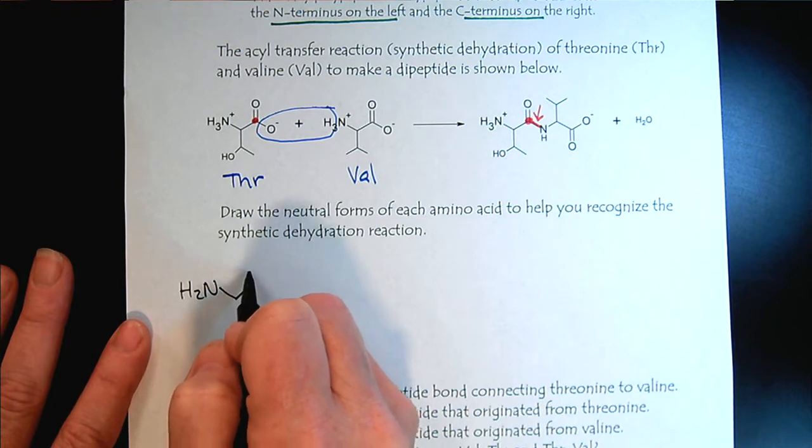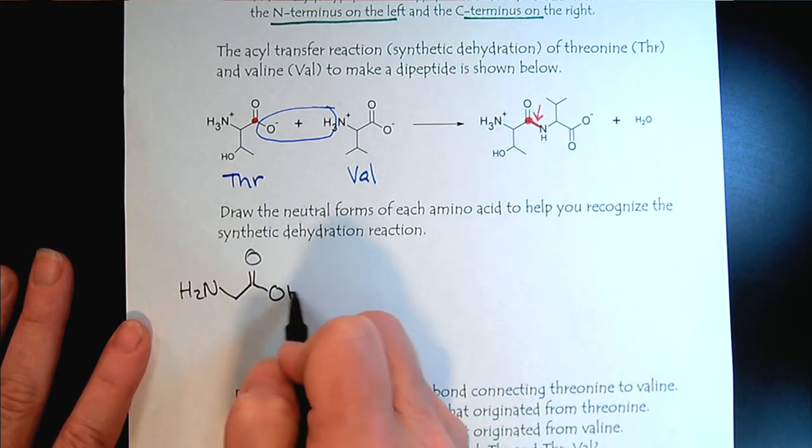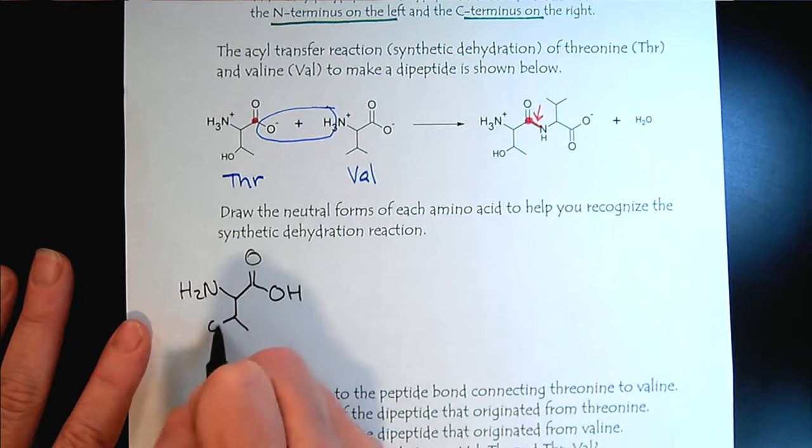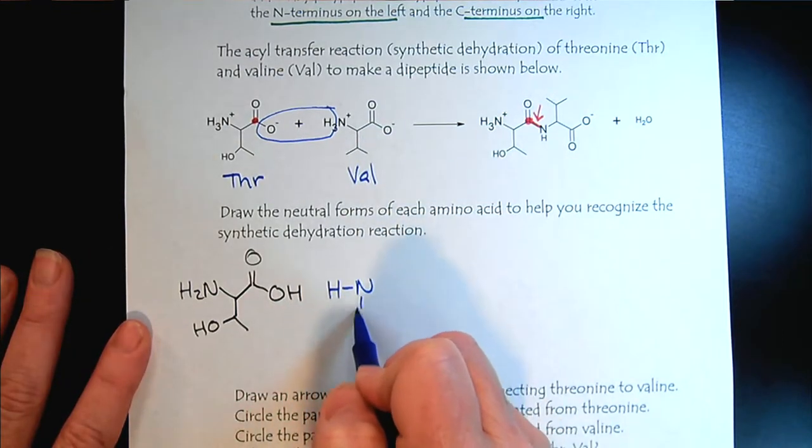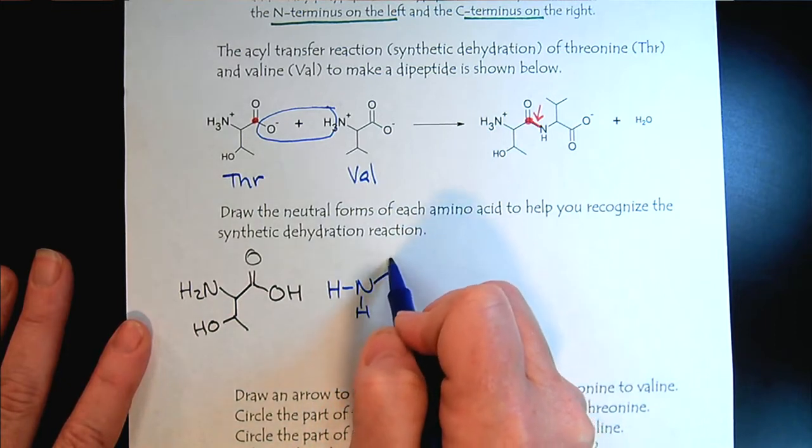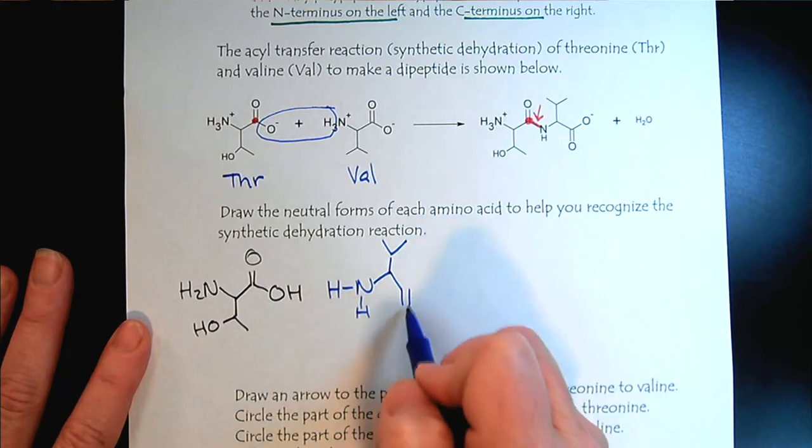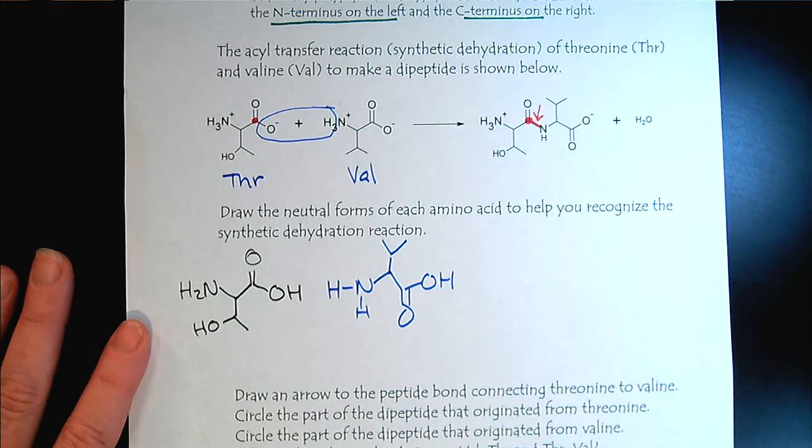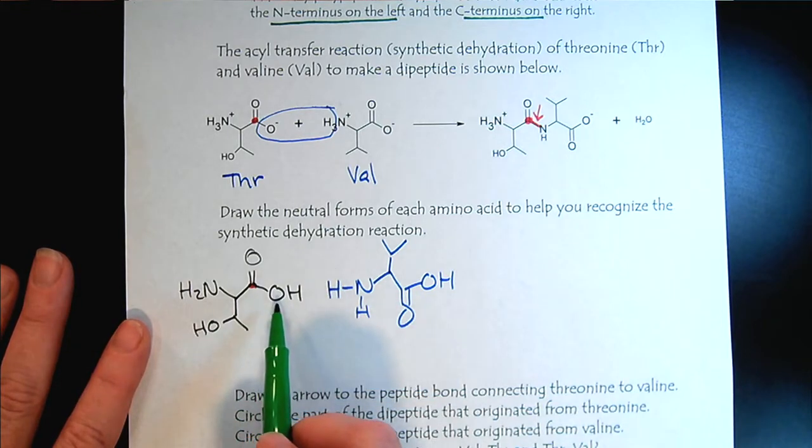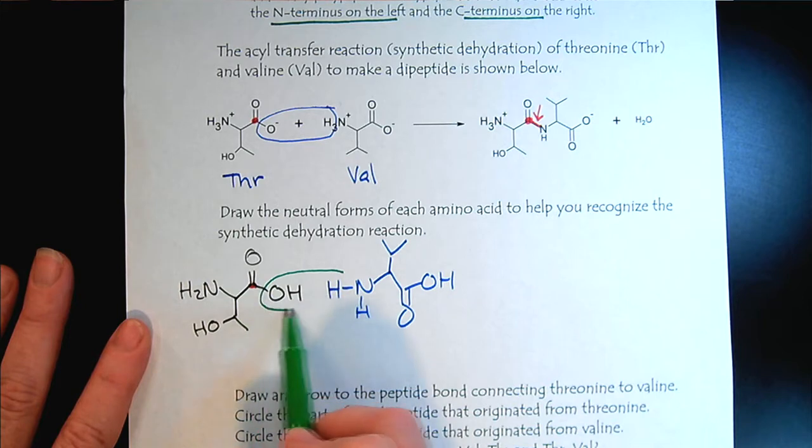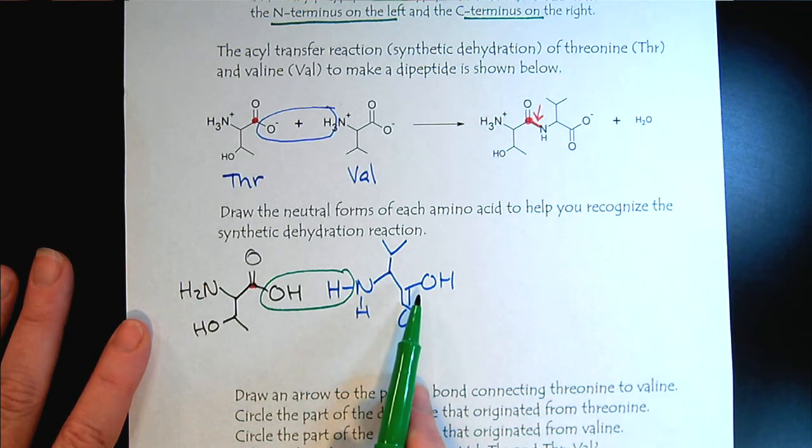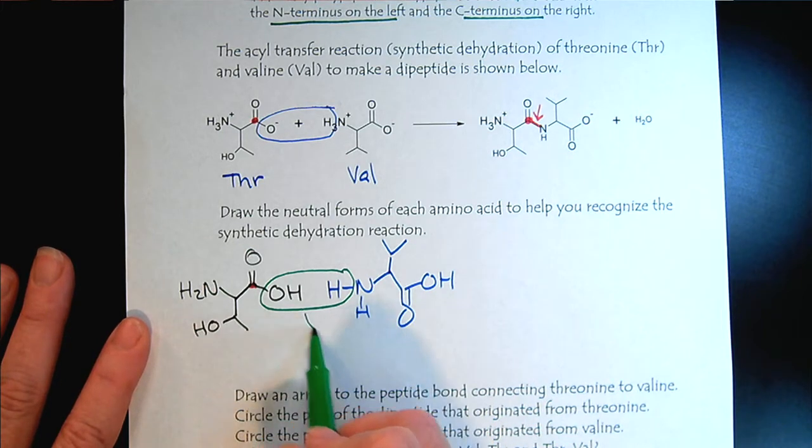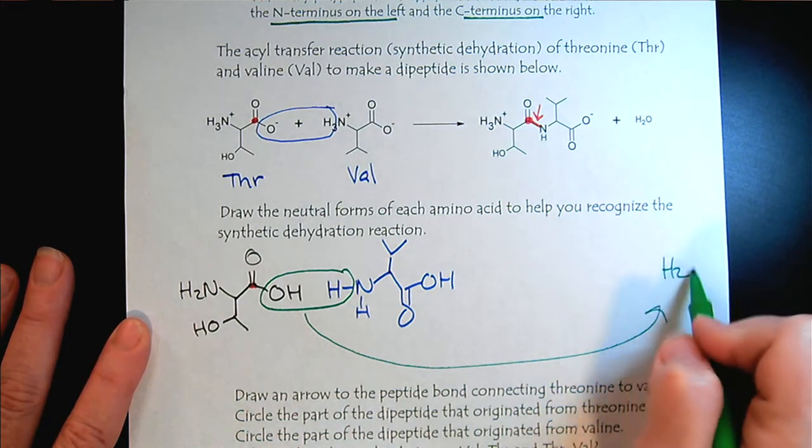So let's do the neutral form to help us. Here's our landmark, the carbonyl carbon. We call this synthetic dehydration. It'll always be the alcohol group - remember everything you learned from our functional group reactivity. We're taking two small amino acids and linking them together to form a dipeptide, and water will be produced as a byproduct.